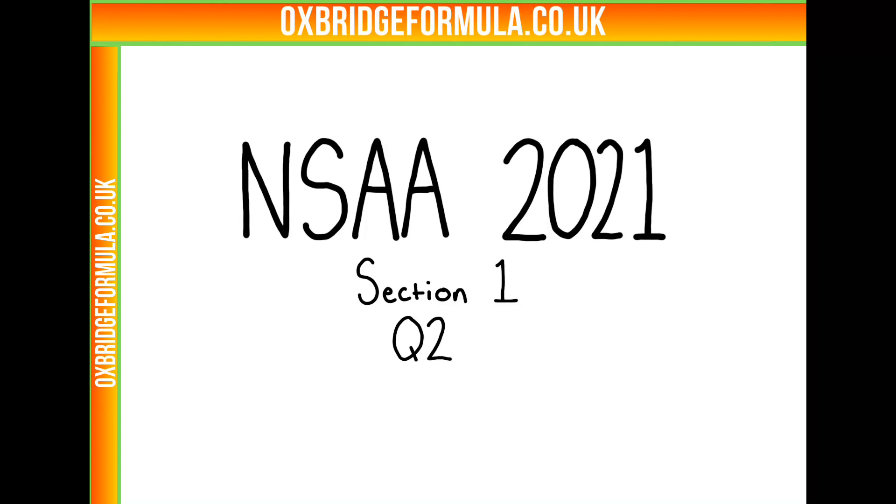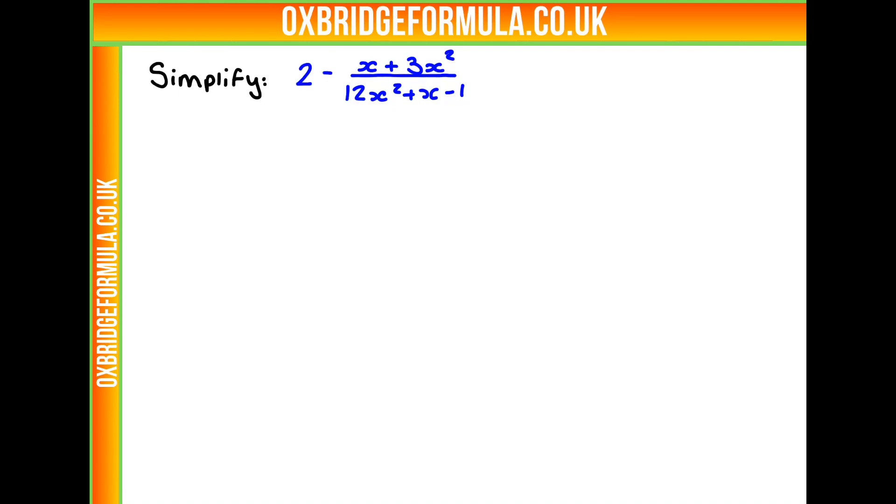This is ENSA 2021, section 1, question 2. We're asked to simplify 2 minus x plus 3x squared over 12x squared plus x minus 1.